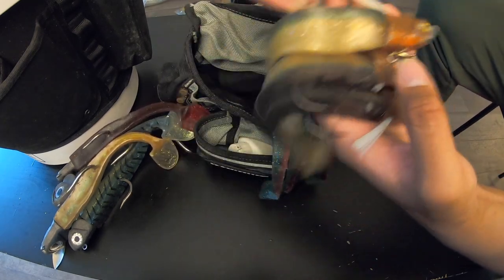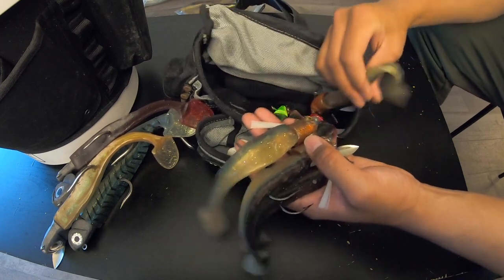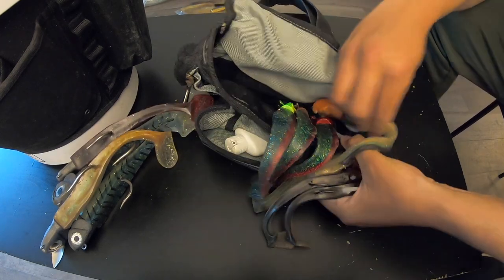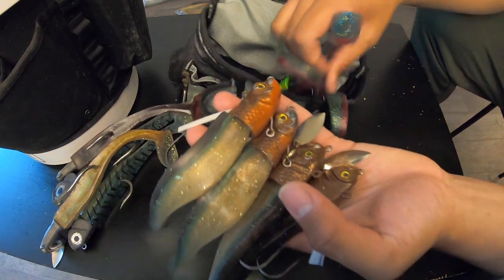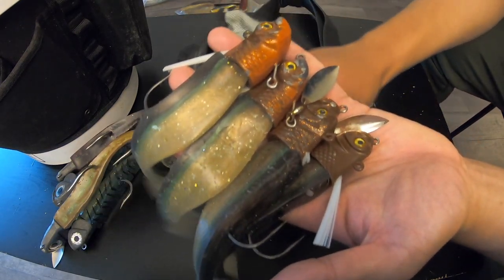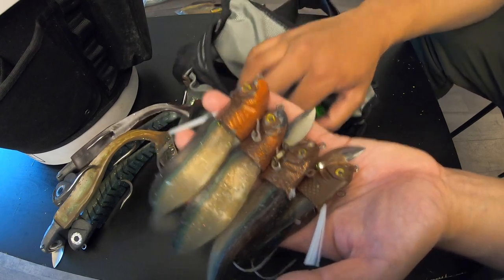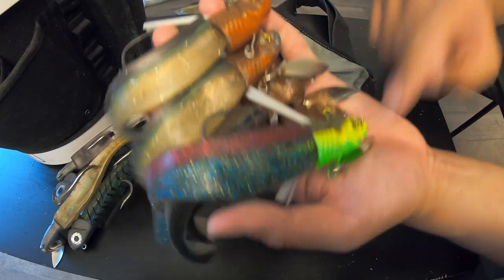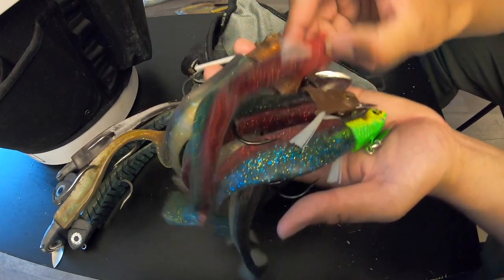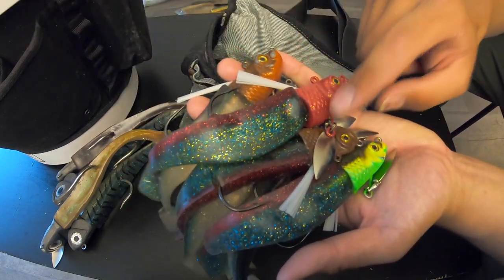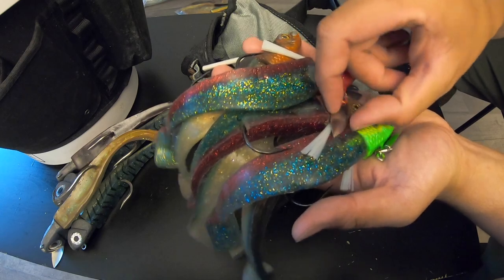These jig heads here, you'll notice I have a lot of them. We're gonna talk about these colors as well. Basically these are DNM Custom Baits Salty Dogs - that's the name of this underspin. They all come with a little blade.